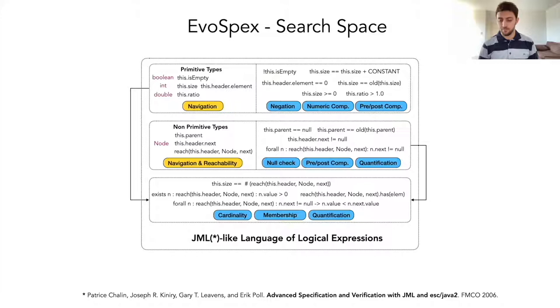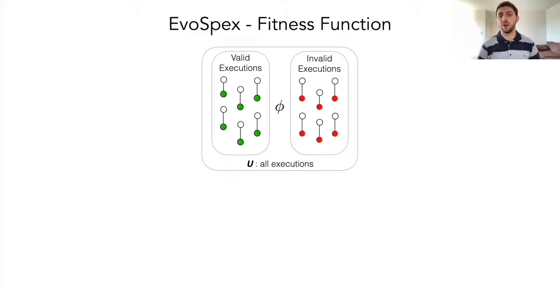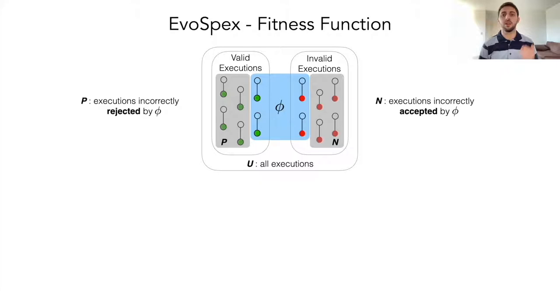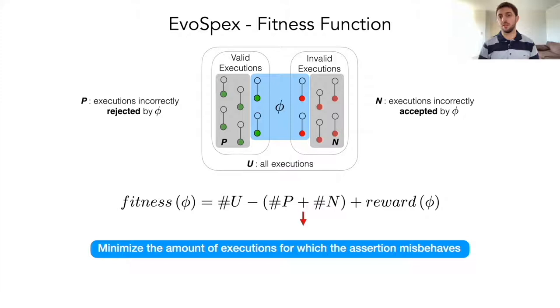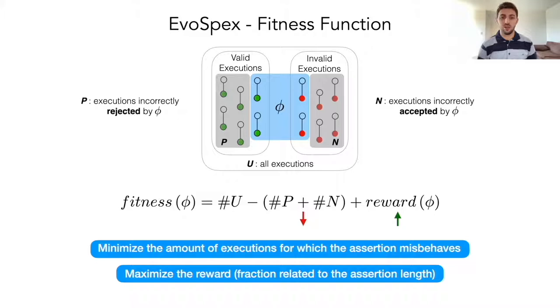Another important aspect of our algorithm is the fitness function: how we evaluate how good is a candidate post-condition assertion. At a certain point during evolution, a post-condition assertion may accept some valid executions but not all of them, and may reject some invalid executions but not all of them. What we do is compute the set of executions that are incorrectly rejected by the assertion and the set of executions that are incorrectly accepted by the assertion. Then we compute the fitness value using this formula, and the algorithm's goal is to maximize the value of such a formula. The way of doing so is to minimize the amount of executions in the gray area and maximize this reward that is essentially a fraction related to the assertion length.